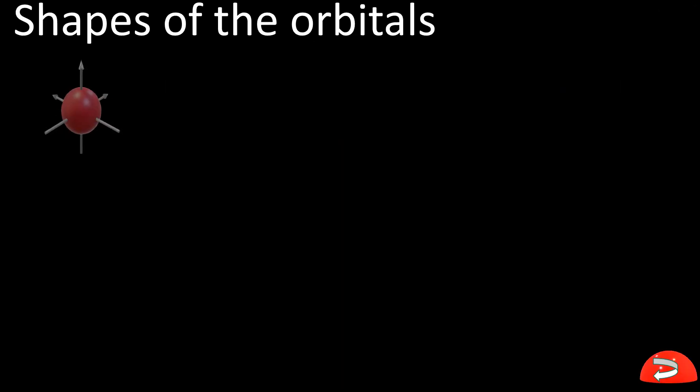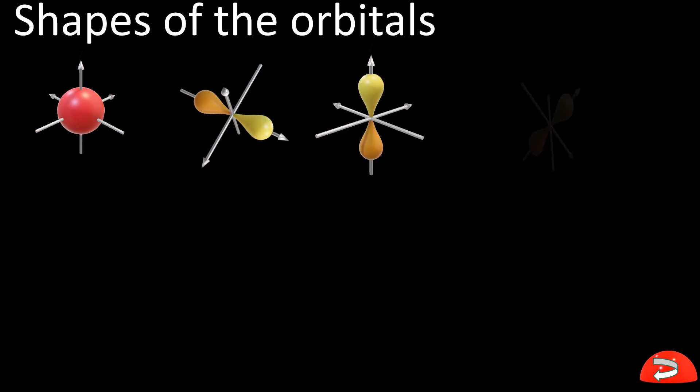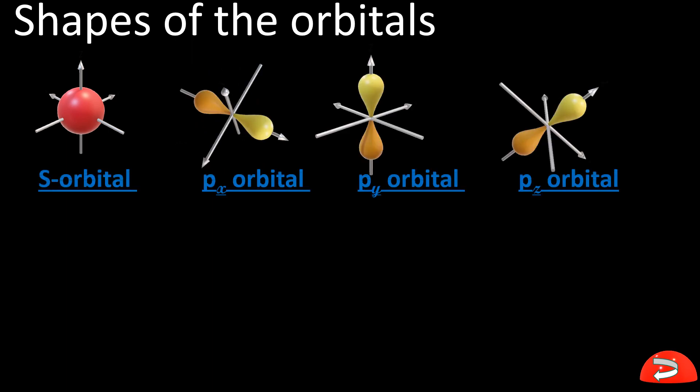Now let us see the shapes of the orbitals. This is the s orbital, and this is the p orbital. There is only one s orbital. There are 3 p orbitals — px, py, and pz.